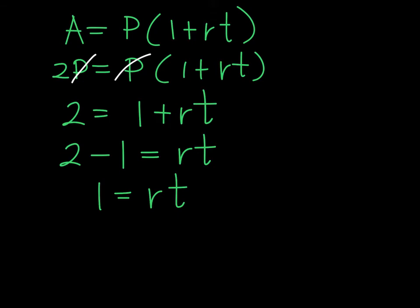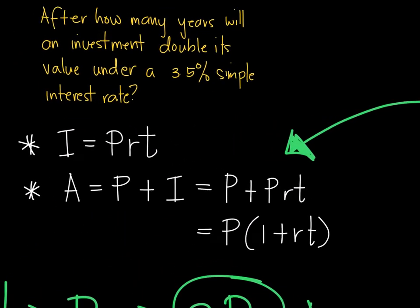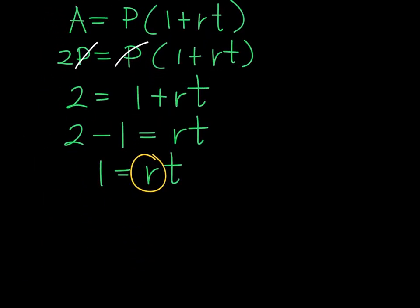And from here, it's very easy now to find the T, because we already know what's the R. So if we will place the R, which is given in the problem as 3.5%, then this will become 1 is equal to 3.5%, which is 0.035 times the time.